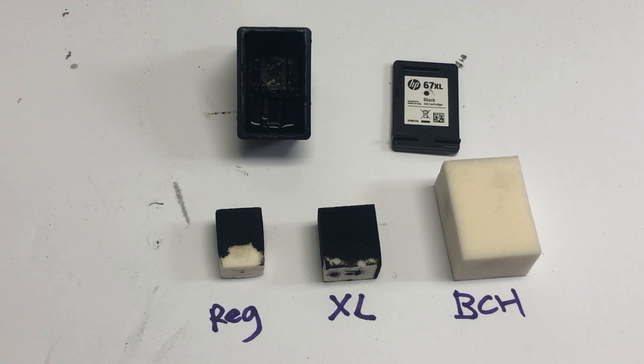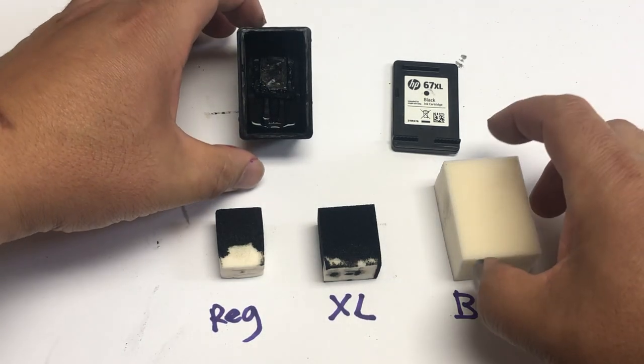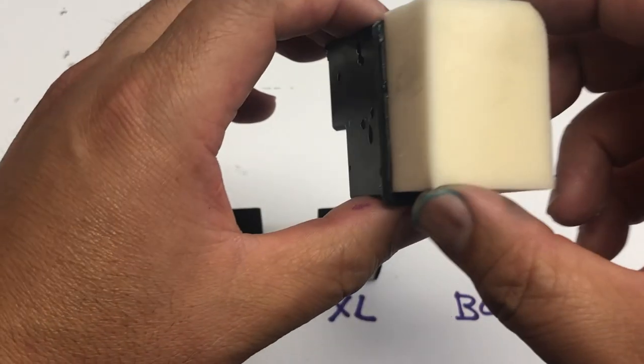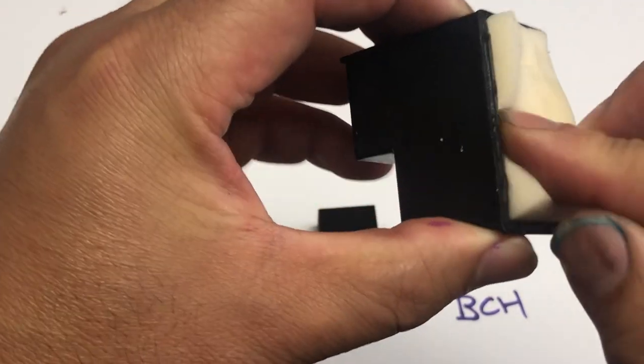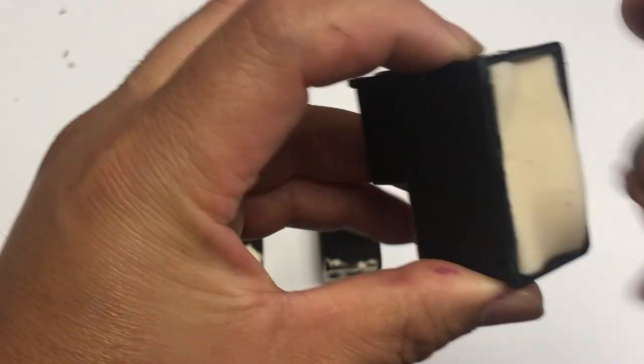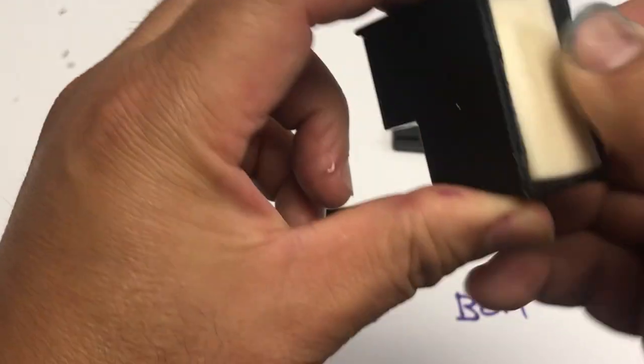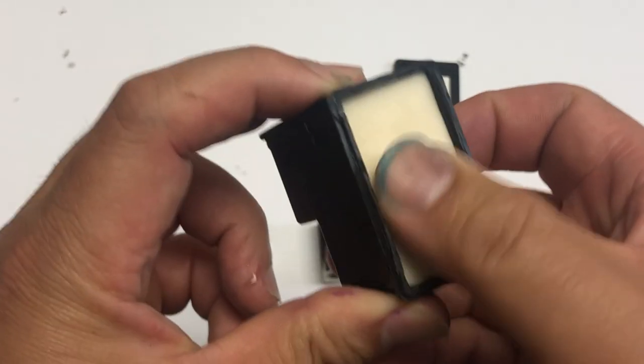Now is the fun part. The sponge is made larger than the cartridge. That's intentional. You have to squeeze it and make it really snuggy. Press it down harder if you didn't make the bottom totally flat.